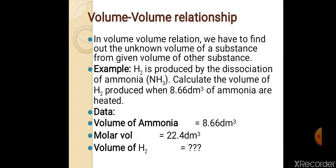We have to calculate the volume of hydrogen produced when 8.66 dm³ of ammonia is heated and reacted. So the given data is: volume of ammonia = 8.66 dm³, molar volume = 22.4 dm³, and volume of hydrogen is what we have to calculate.